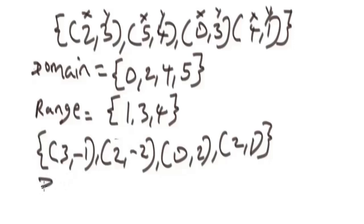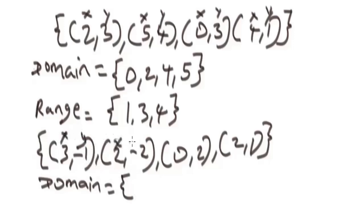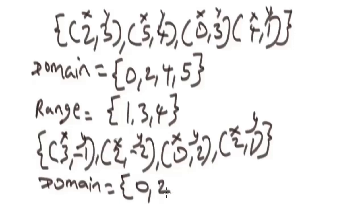Okay, so let's do it together. The domain of these ordered pairs will be the x-values. The least x-value is 0, then we have 2 — and since 2 appears twice, we just take one of it — and lastly we have 3. So the domain is {0, 2, 3}.